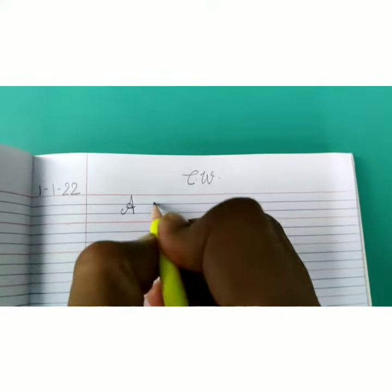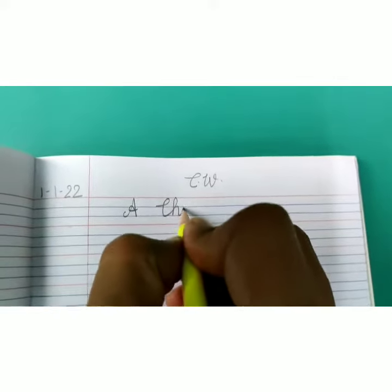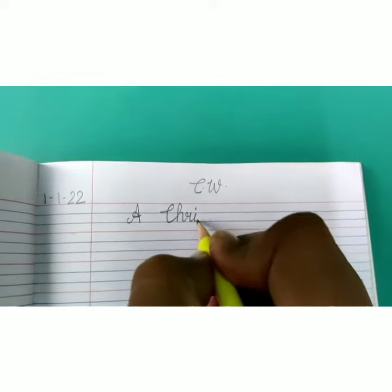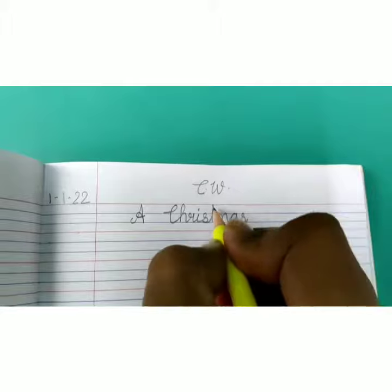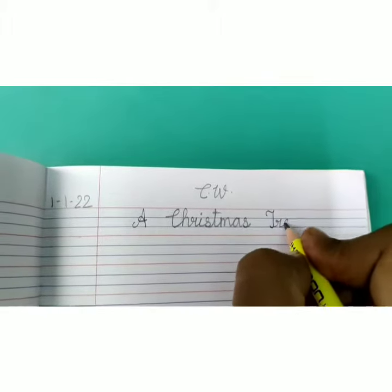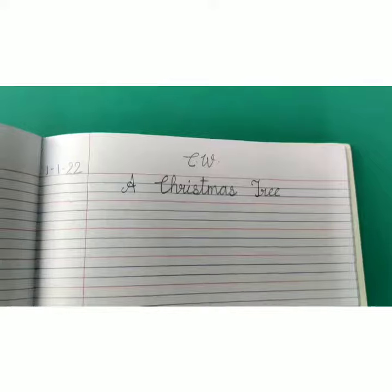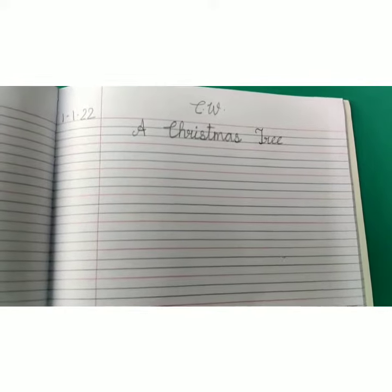Now write down heading capital A, one finger space capital C-H-R-I-S-T-M-A-S Christmas. One finger space capital T-R double E tree. A Christmas tree.